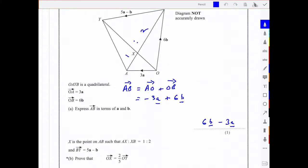We're told that BY along the top there is 5a minus b, and we're asked to prove that OX is 2 fifths of OY. So we need an expression for OX, we need an expression for OY, and then we would hope that OX is clearly 2 fifths of OY.